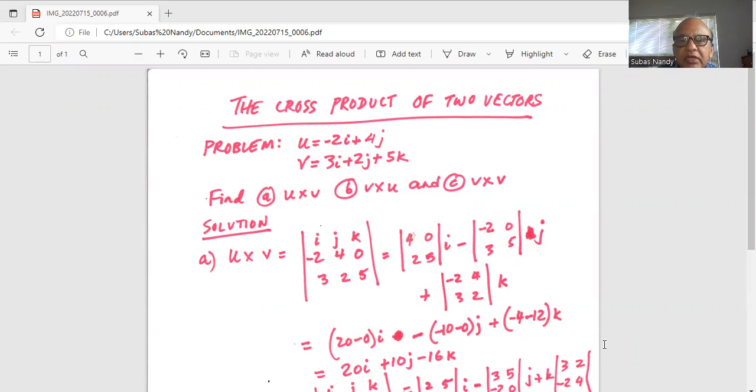So in order to find u cross v, we write it as a determinant i, j, and k in the first row, and in the second row the coefficients of i, j, and k in u, which is -2, 4, and there is no k, so it is 0 for the coefficient of k, and for the third row it is the coefficient of v, 3, 2, and 5, or the directional numbers.